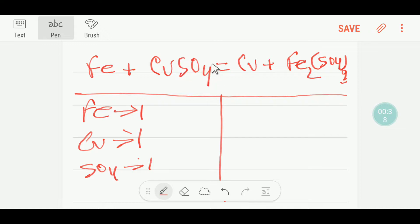On the right hand side we have just one copper, here we have just two iron, and here we have just three sulfate.